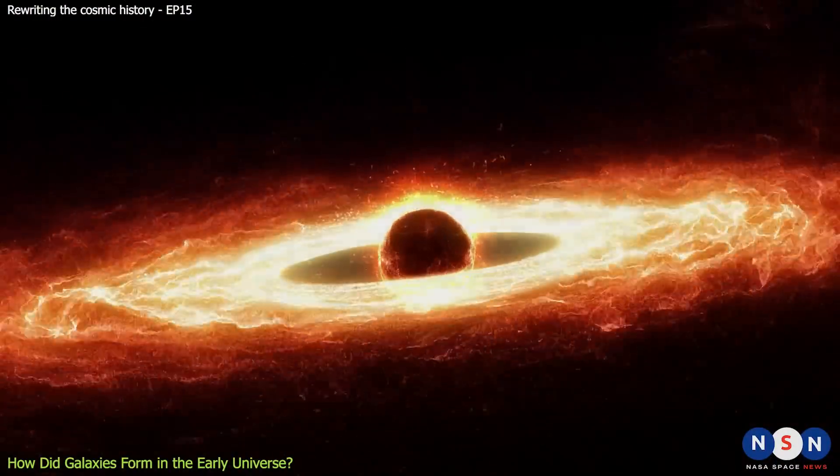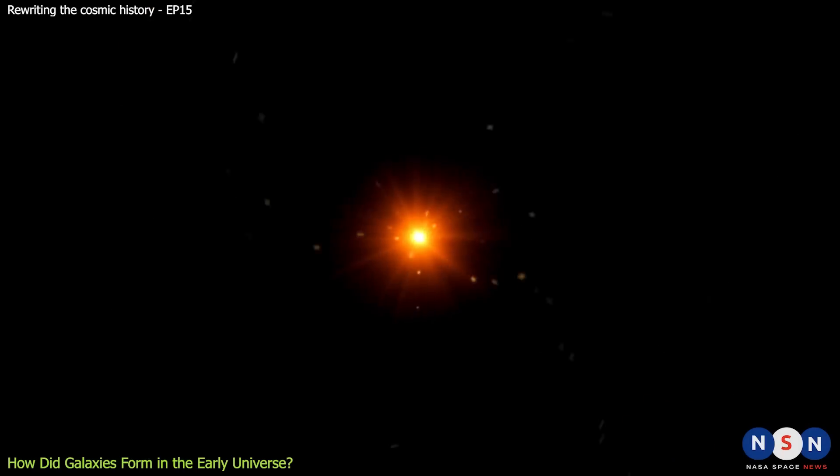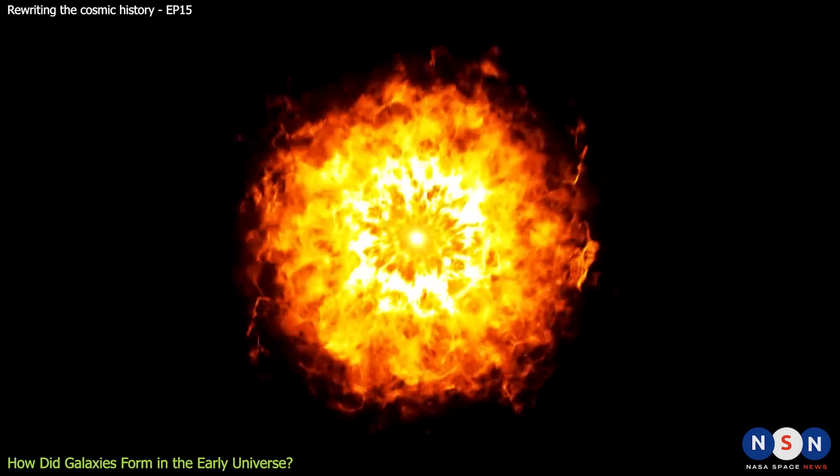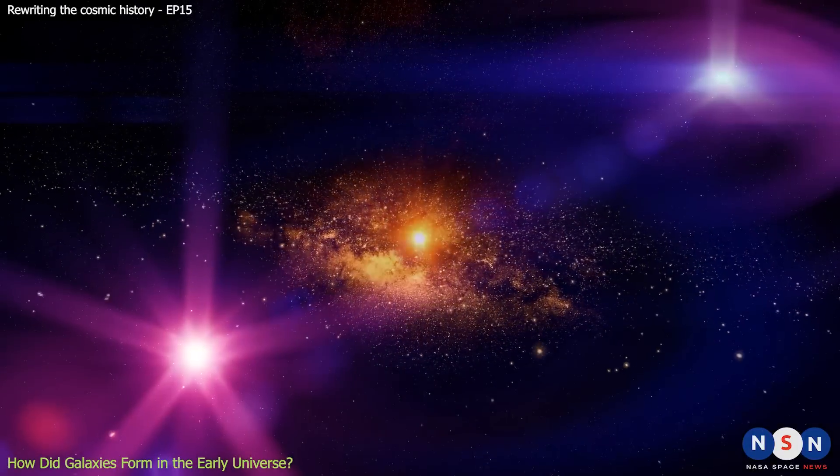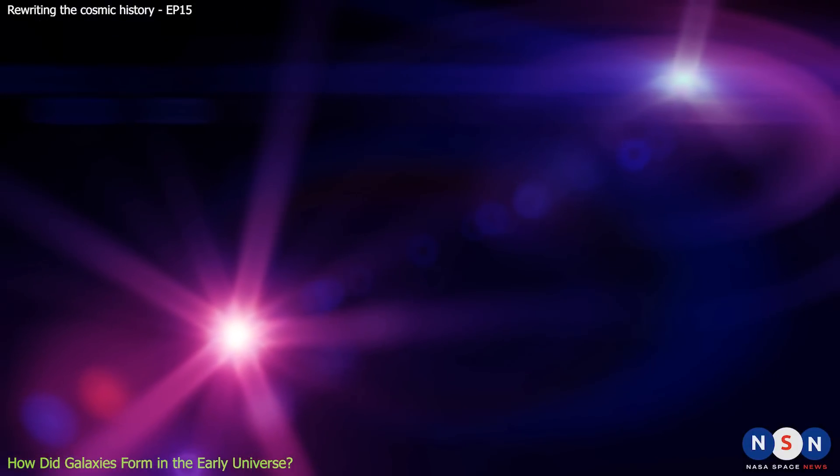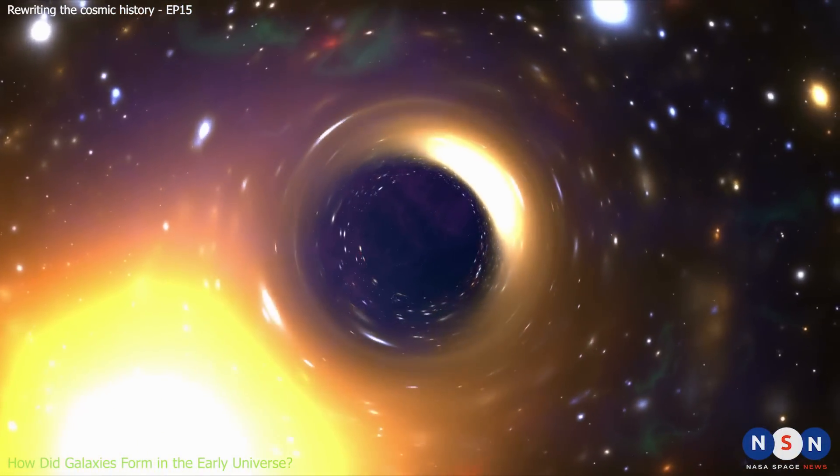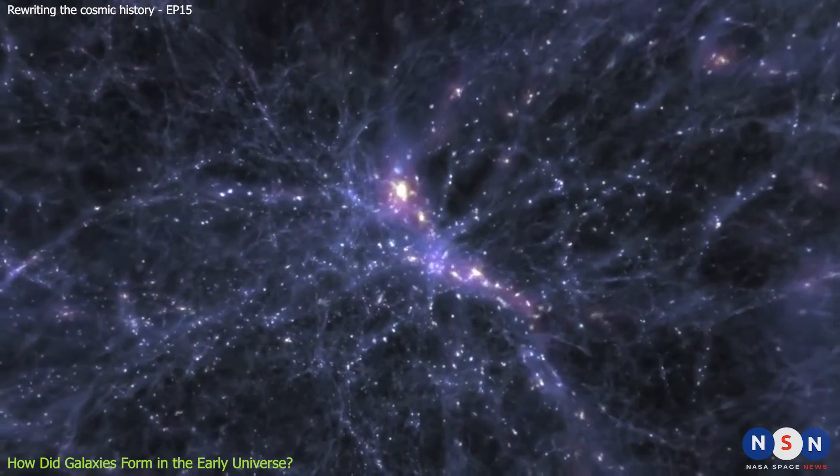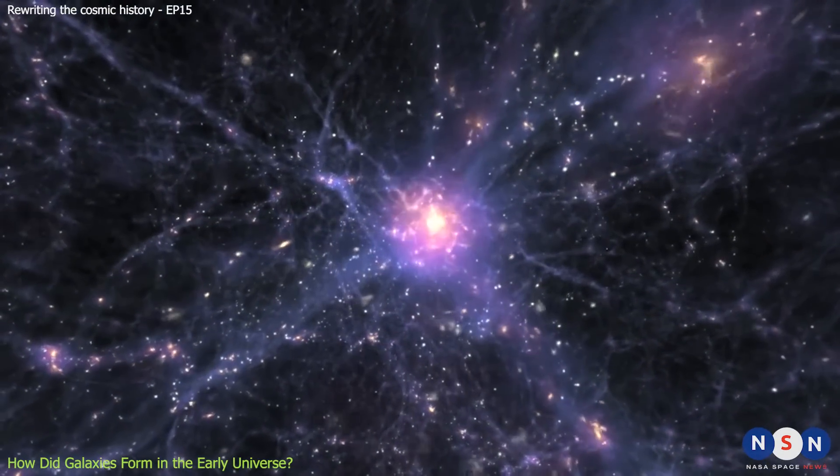According to our current theories, the first black holes should have formed about 100 million years after the Big Bang, when the first stars and galaxies started to form. These black holes were probably very small, only a few times the mass of the Sun. But over time, they grew bigger and bigger by swallowing more matter and merging with other black holes.